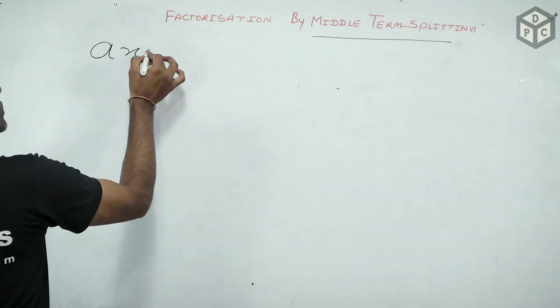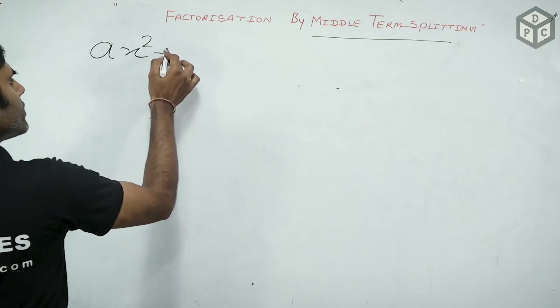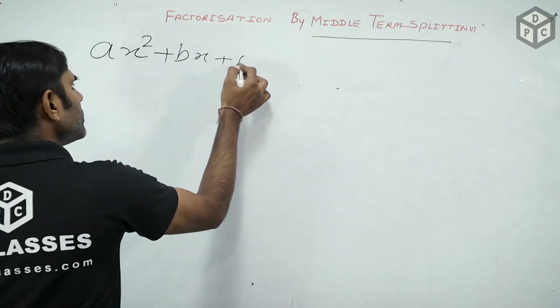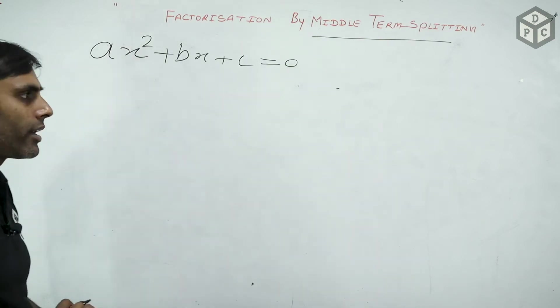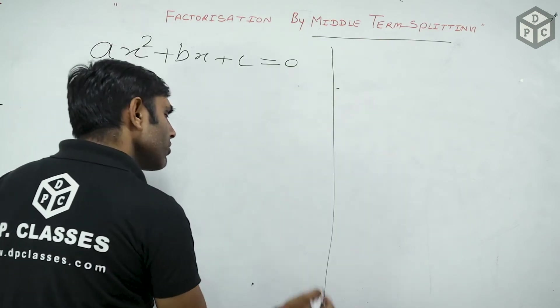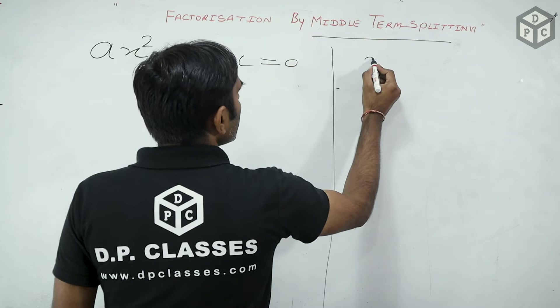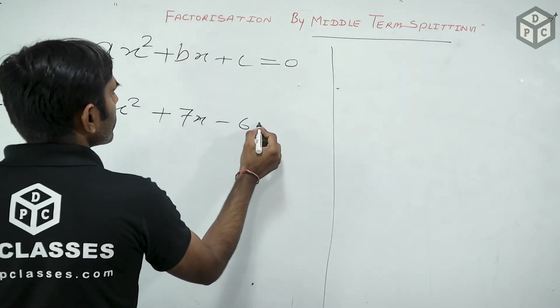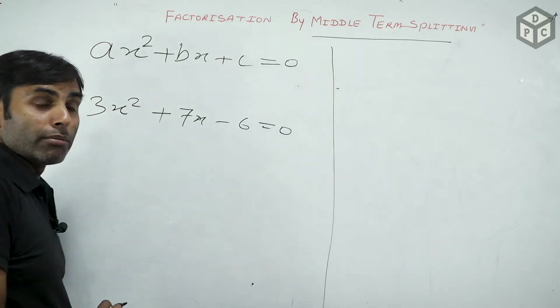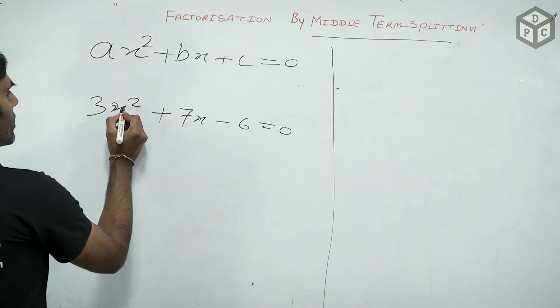A simple example. A standard form is Ax square plus Bx plus C. Equation format is 0. Now I have to factorize it. I have to take a number. Suppose I took a number. 3x square plus 7x minus 6 equal to 0. This is a number.